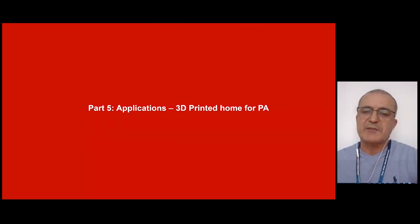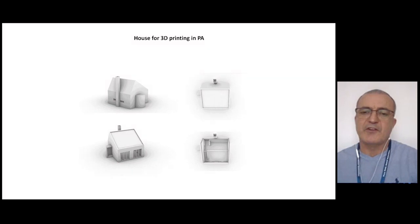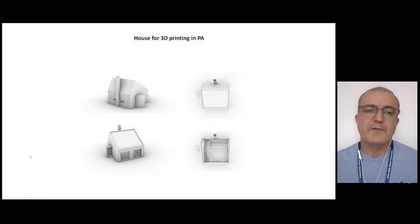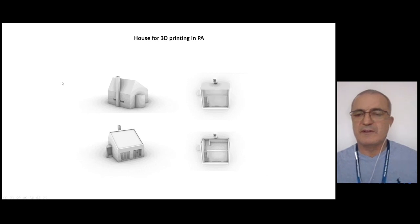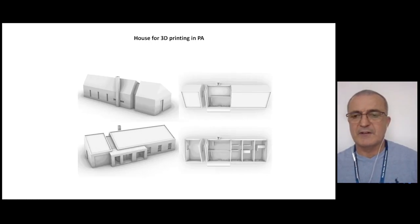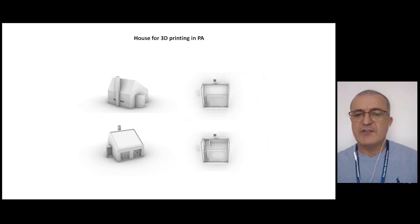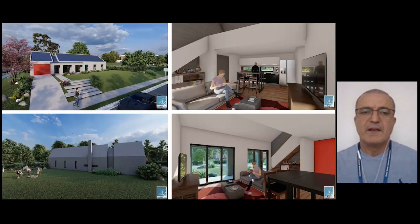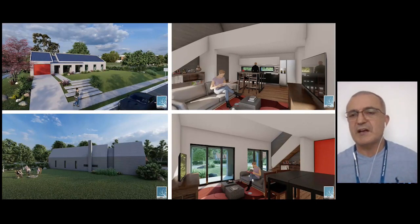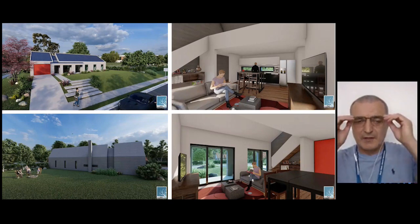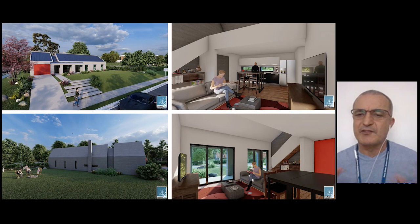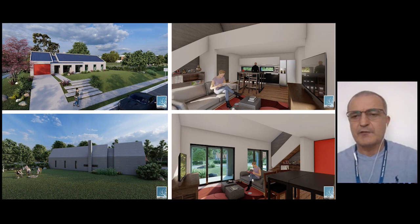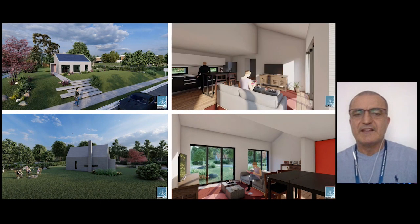What we are focusing on now is printing houses on Earth. We have designed a housing system for expandable houses — you can customize the design according to family requirements. This house is to be printed near the university in Pennsylvania. We designed the house not to stand out but to blend in, so that people will be more receptive to the idea of a 3D printed house. You see an example with three bedrooms and one with just one bedroom — the house is expandable.